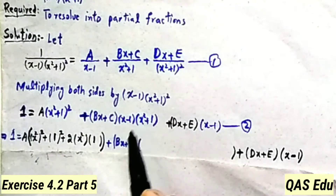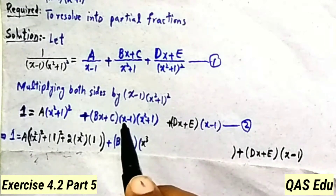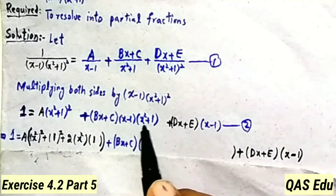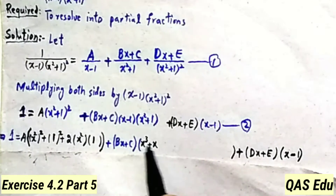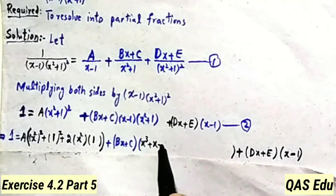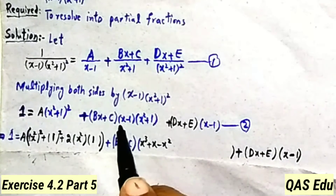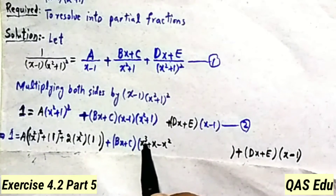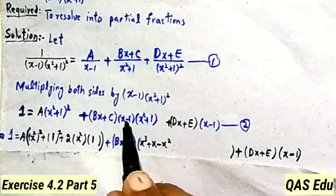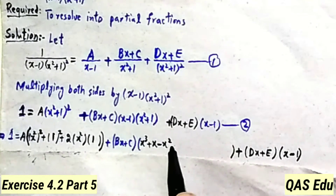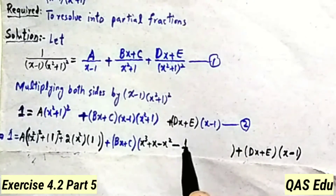Expanding further: x multiplied by x square gives x cube. x multiplied by 1 gives x. Minus 1 multiplied by x square gives minus x square. Minus 1 multiplied by 1 gives minus 1.